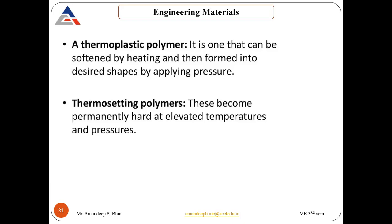Thermosetting polymers, once formed into shape and cooled, become permanently hard. Even if you try to heat them again, they won't melt — this means thermosetting polymers cannot be recycled. Once they are set, they are fully set. Examples include epoxies, vulcanized rubber, phenolic and polyester resins. This is the main difference between thermoplastics and thermosetting plastics.